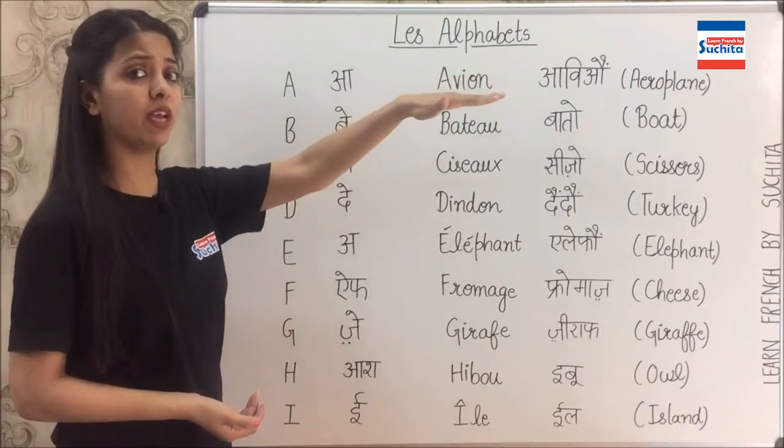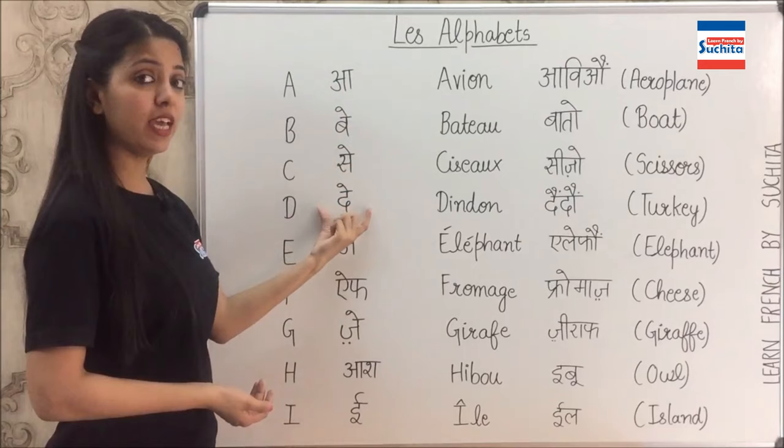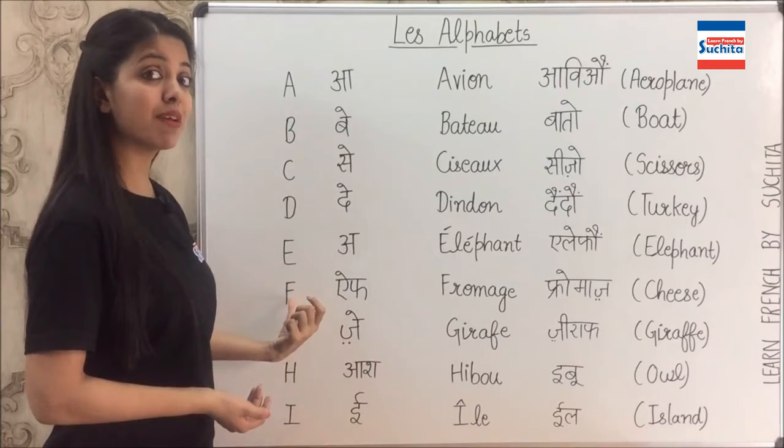Next is B — bé. Then C — sé. D — dé. E — euh. F — eff. It is the same as English.